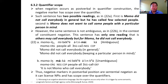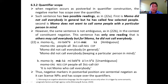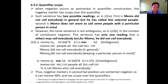Quantifier scope. When negation occurs post-verbally in a quantifier construction, the negative marker has scope over the quantifier. Such a sentence has two possible readings, as in 22a. The first reading is: Momo did not call everybody in general, but he called a few selected people. The second reading is that Momo does not want to call some people with a particular person in mind. Whereas the same sentence is not ambiguous in the context of constituent negation in 22b, and has only one reading: others may call everybody, but for Momo, he did not call everybody. Thus, negative markers in post-verbal position are sentential negation, as they can license NPIs and have scope over quantifiers.